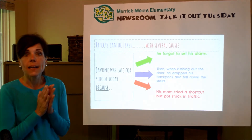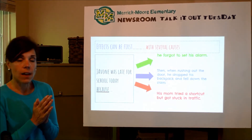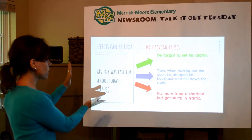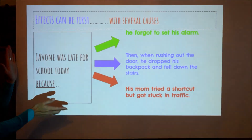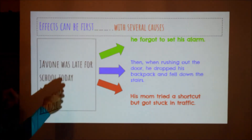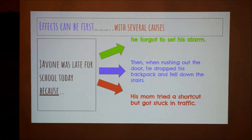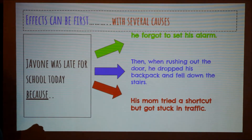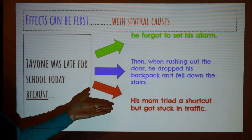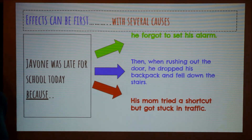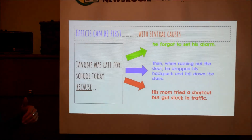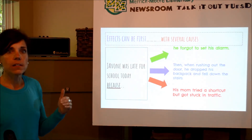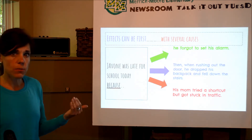So now we're going to get into thinking about how this is not as simple as the last assignment. It's not just 'here's the cause, here's the effect.' Sometimes writers are going to give you the effect of a situation, and then talk about the causes of that big effect. For example: Javante was late for school today because he forgot to set his alarm. Then he was rushing out the door, dropped his backpack and fell down the stairs. His mom tried a shortcut but got stuck in traffic. Our job as readers is to put these ideas together while reading closely to what the sentences are saying.